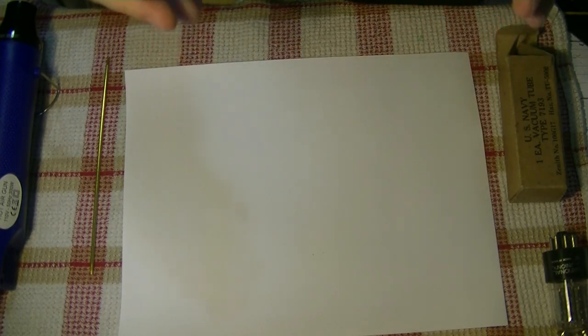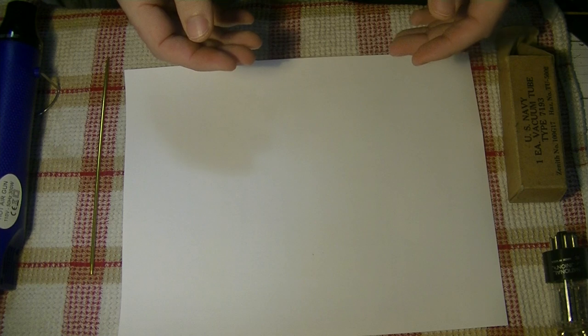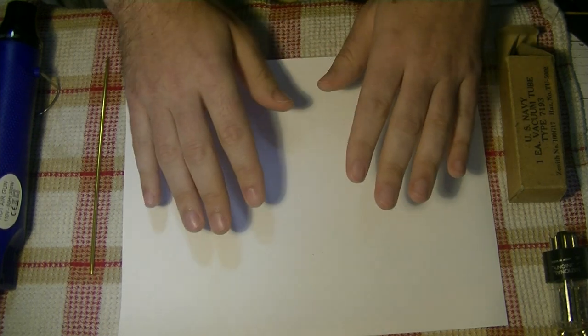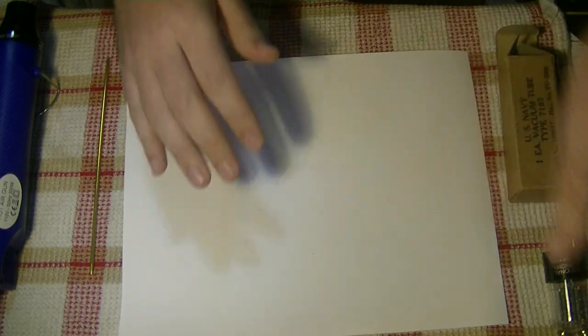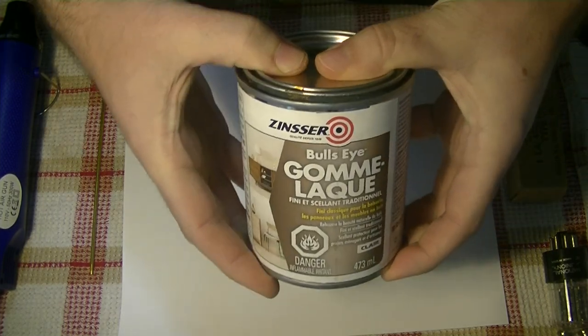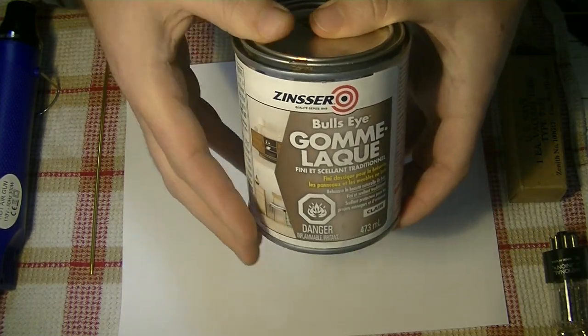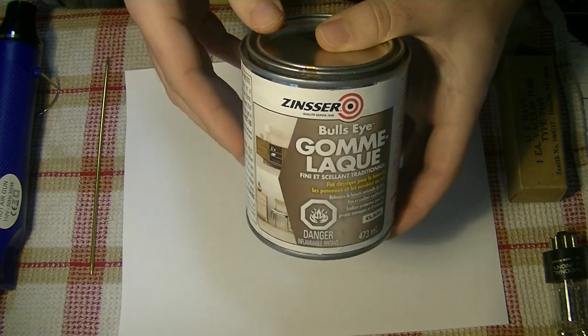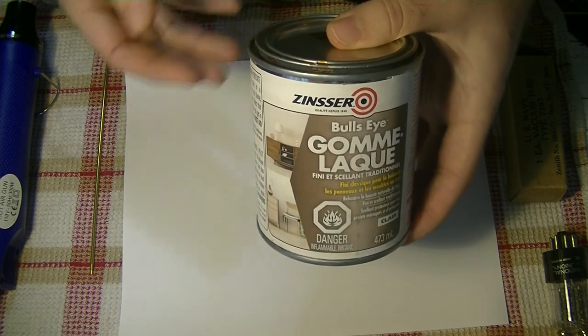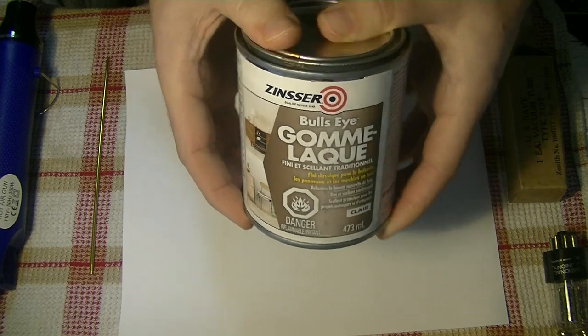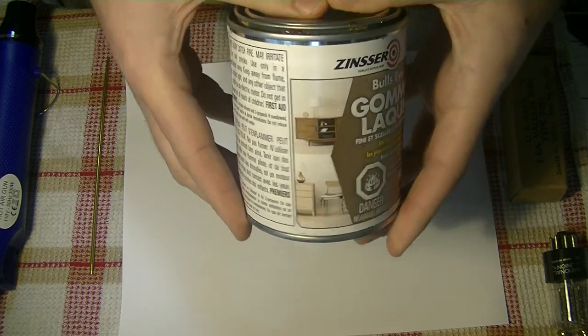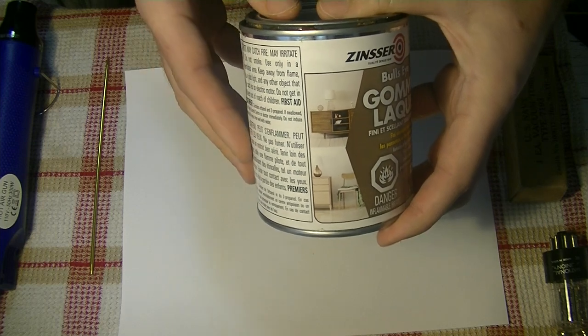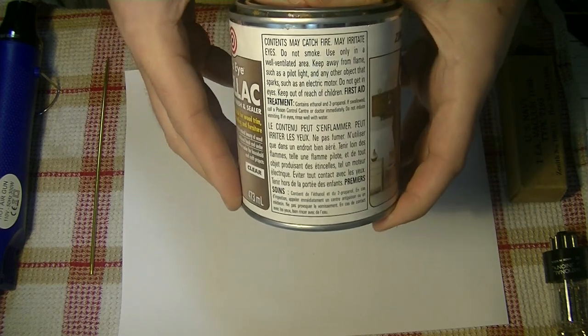So let's take a look at the tools we use to fix damaged bases, and I'll walk you through the process that we've developed. First, what we want is some clear shellac. You want it without any additives, and you can find this at most home improvement, hardware stores, things like that. It's still pretty common. Shellac is a great wood finish and it's still used for that these days.